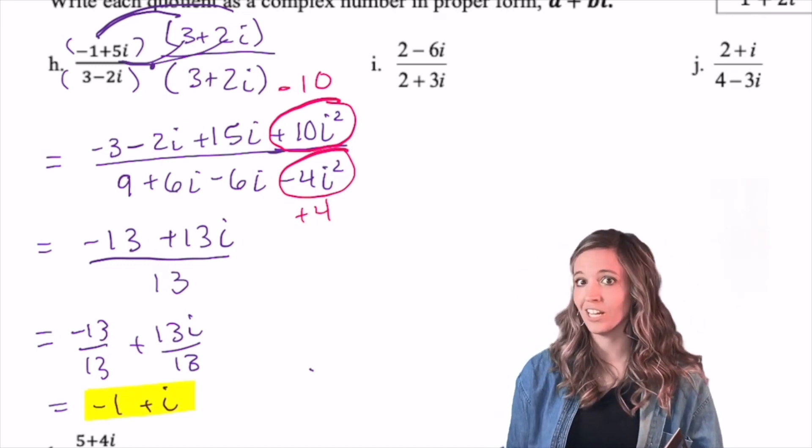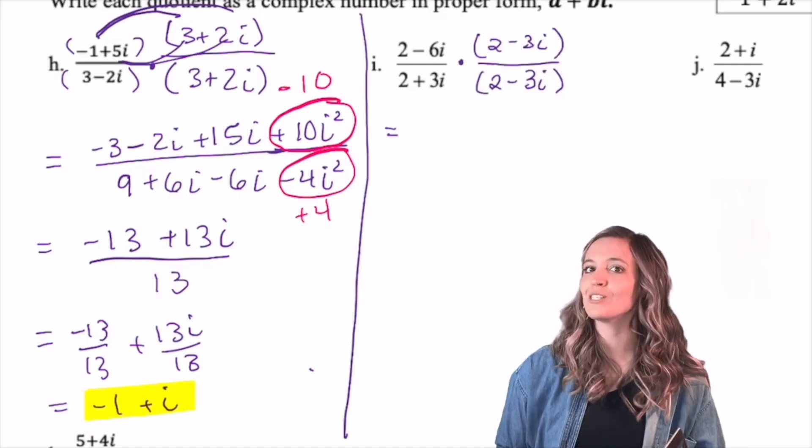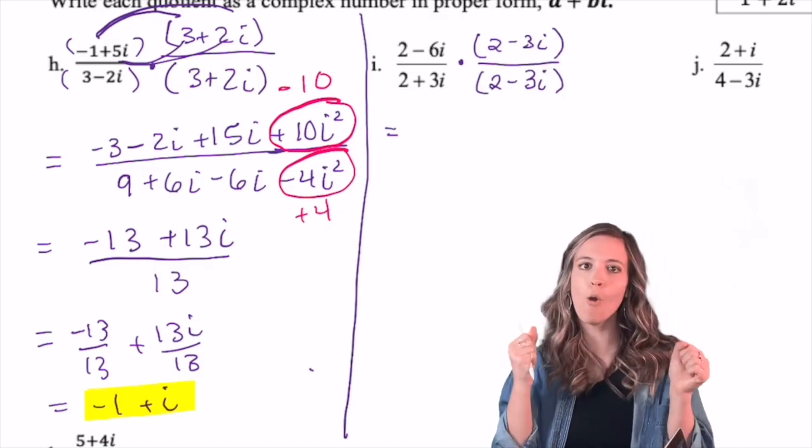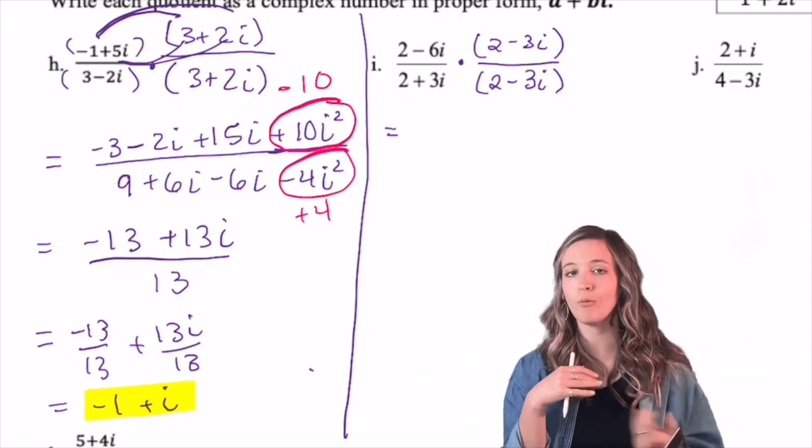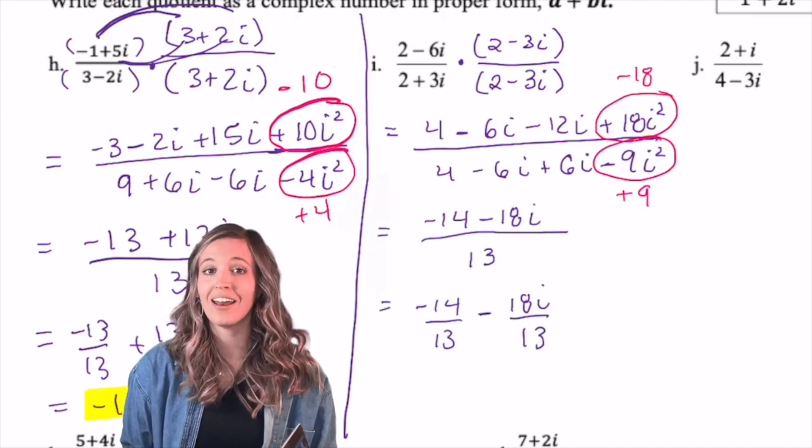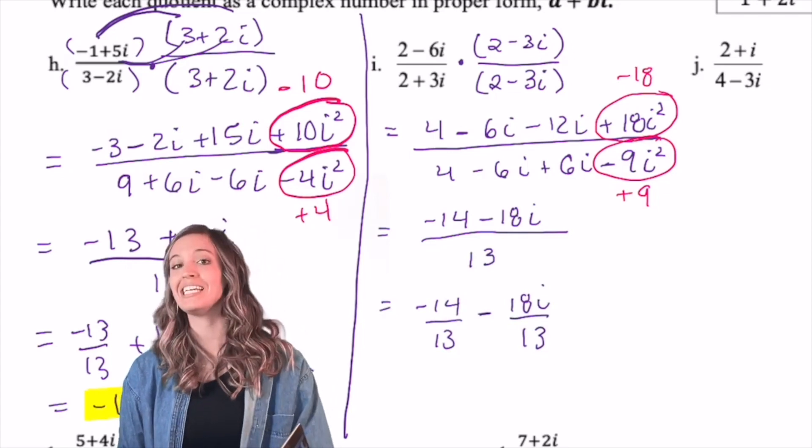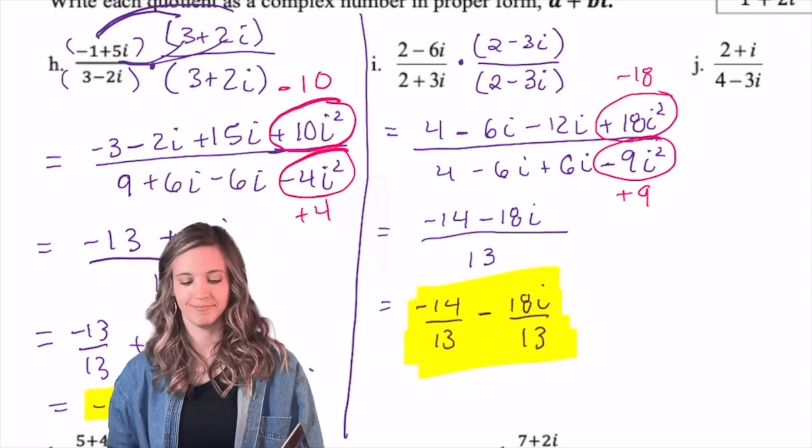Looking at this next example, what's the conjugate? How are you going to write it as a creative form of 1? Go! Did you write 2 - 3i divided by 2 - 3i? Now it's time to multiply that numerator. Multiply the denominator. Be careful. Let's see how you're doing on i. Did you get -14/13 - 18i/13?